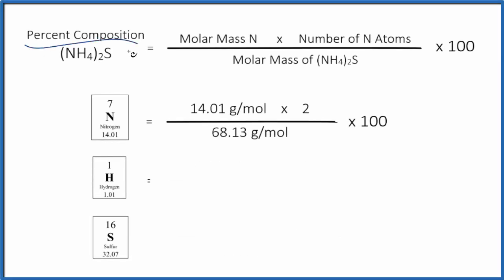Let's calculate the percent composition by mass of NH₄₂S. This is ammonium sulfide. We'll use this general formula here to figure out the composition for each element in NH₄₂S.